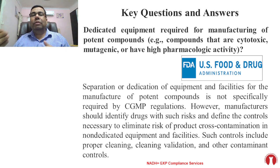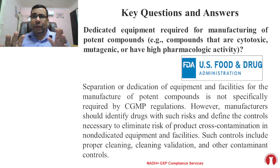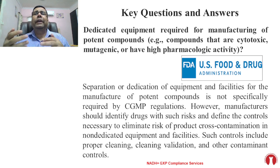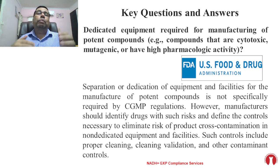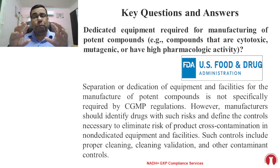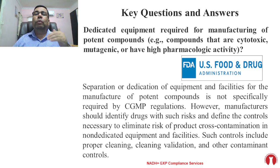So what you get from this FDA requirement is: yes, we can manufacture potent molecules in the same facility — separate or dedicated equipment and facility is not required. However, we need to perform a risk assessment, identify risks with respect to cross-contamination, and then put appropriate controls in place. That is the expectation.